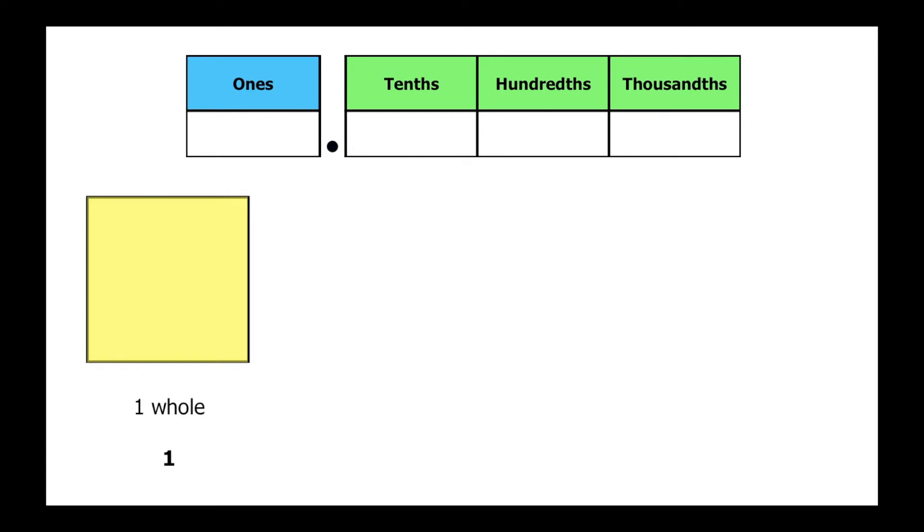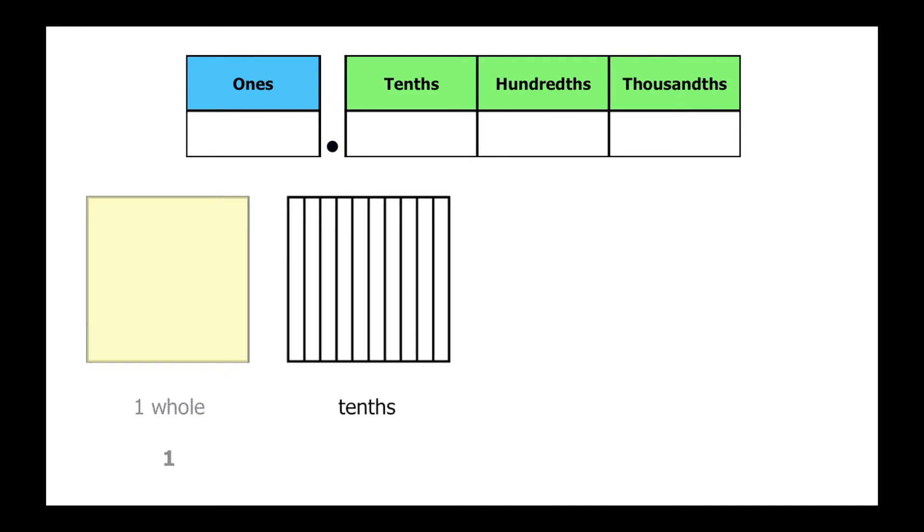Now let's divide our square into 10 equally sized parts. Each part represents one tenth of the square. To make it easier to see, we'll shade one of the parts yellow. Let's write its value in the place value chart.